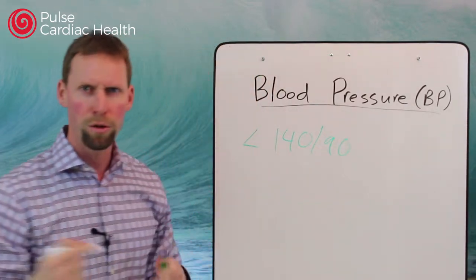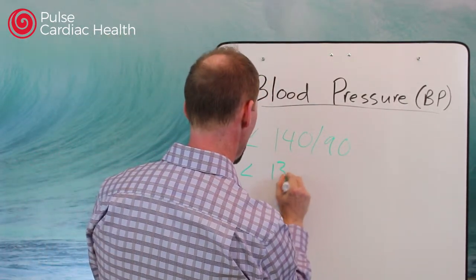Now, if you have diabetes, you need to have a lower blood pressure. It needs to be less than 130 over 80.